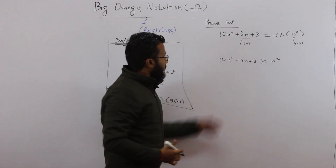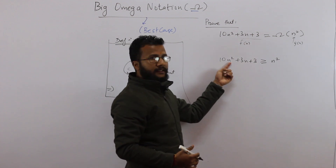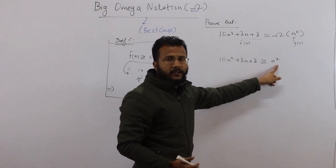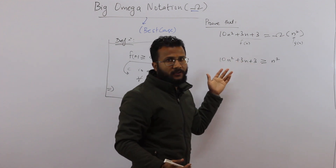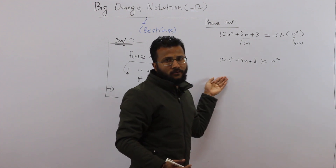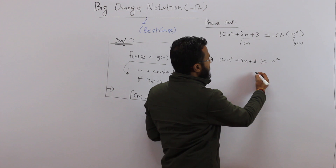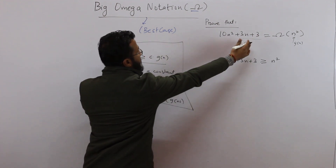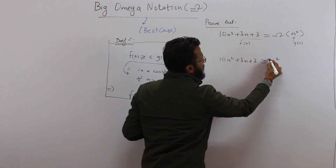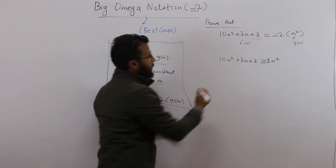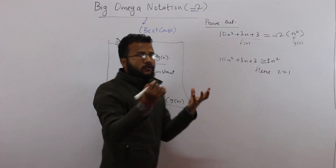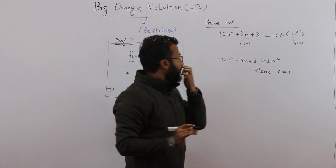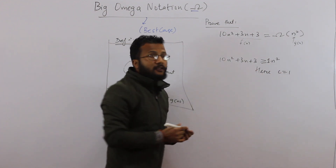If we look at the left hand side, it is 10 times n² plus additional terms 3n + 3. The right hand side is just n². Obviously, 10 times n² is more than n², and moreover the left hand side also adds 3n + 3, so this inequality should always be true. Now I need to express this in the form f(n) ≥ c·g(n). In this case, the value of c is 1. You could also choose c = 9 or c = 10 — different choices give different values, and that's fine.